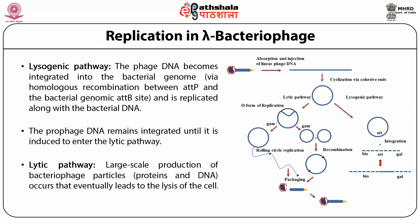Lambda bacteriophage has two types of life cycle. The first is the lysogenic pathway, in which the phage DNA becomes integrated into the bacterial genome via homologous recombination between the attP region and the bacterial genomic attB site. It is replicated along with bacterial DNA, and the inserted lambda bacteriophage within the bacterial genome is known as a prophage. The prophage DNA remains integrated until it is induced to enter the lytic pathway. In the lytic pathway, large-scale production of bacteriophage particles, proteins, and DNA occurs, eventually leading to lysis of the cell.